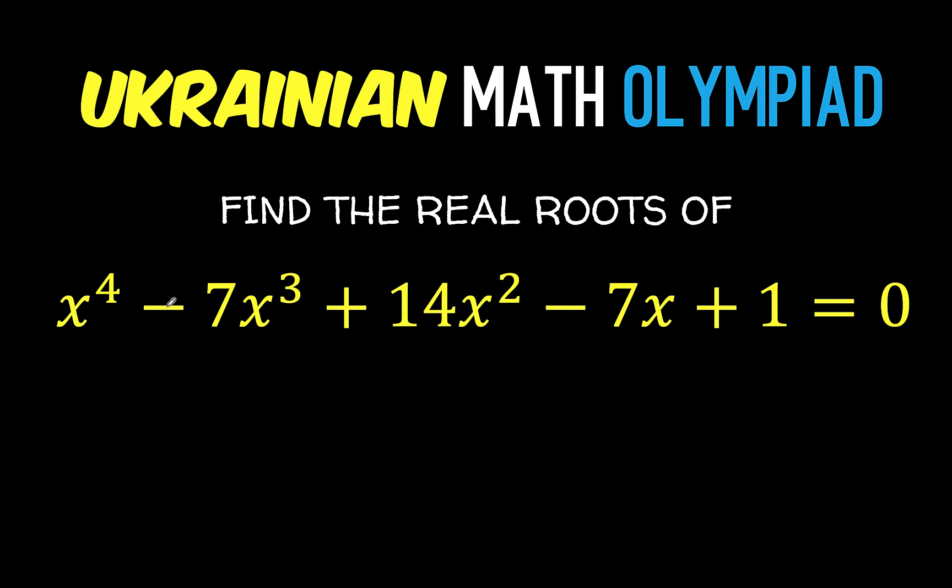Also, we look at the highest degree. The degree of the leading term here is 4, and so we expect that there must be 4 complex roots in this equation. Those roots could be all real numbers or a combination of real and imaginary numbers.